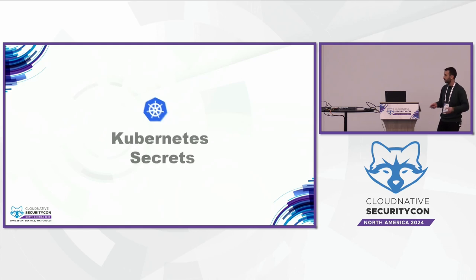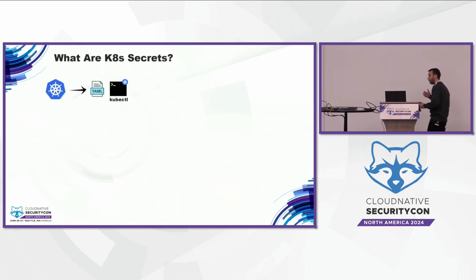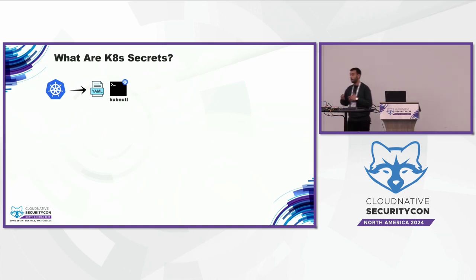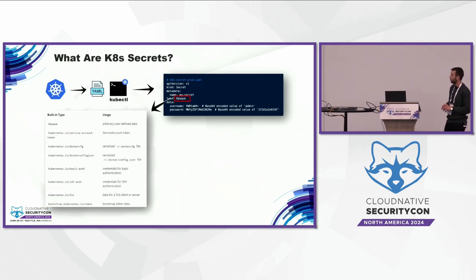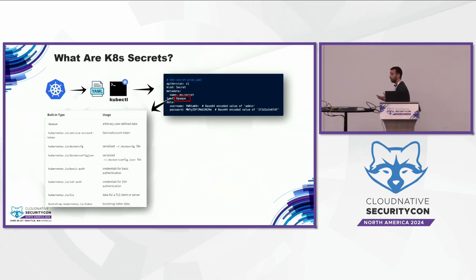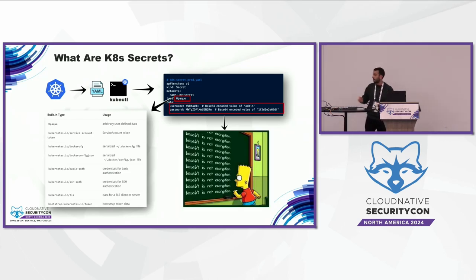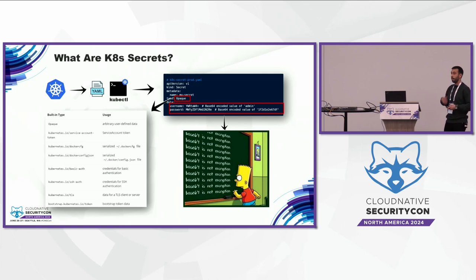Let's start with Kubernetes secrets. If you're already familiar with Kubernetes, you know that you can declare different objects via a YAML file — for example, pods and deployments. One of these objects is a secret object, and this is how a secret file or object in Kubernetes looks like. Secrets in Kubernetes are not secure by default — they are base64 encoded, so anyone can decode them and find the secrets.